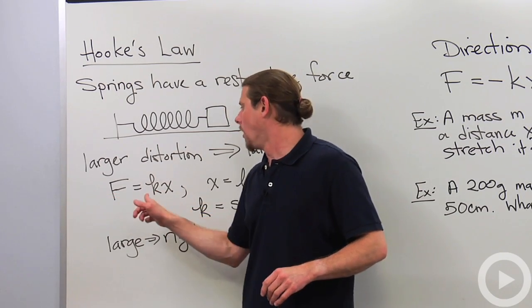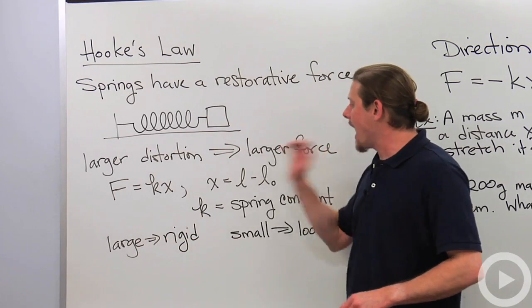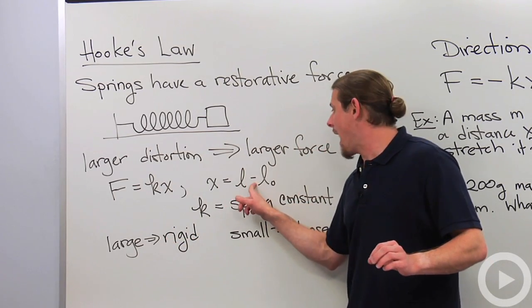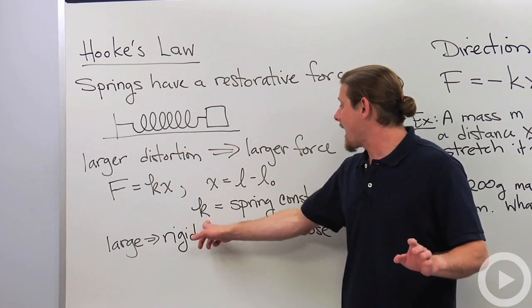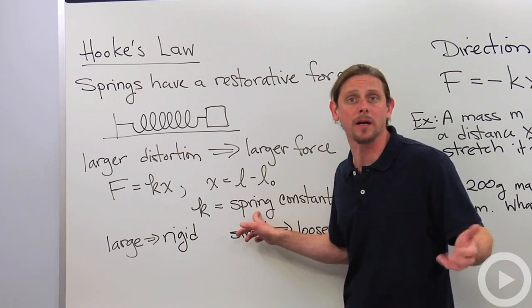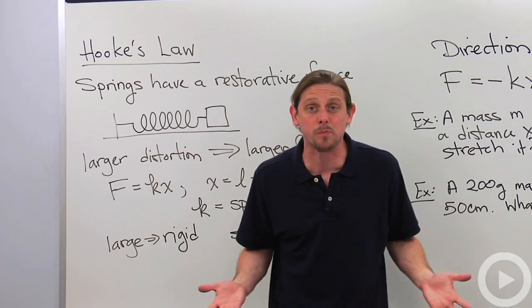So Hooke's law says that that force is proportional to how much I stretched the spring. F equals KX. X is the length of the spring now minus its length when it's relaxed and nobody's pulling on it. K is a constant called the spring constant, and it just depends on which spring we're talking about.